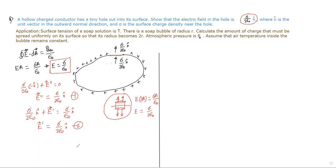Now we can use this result to find electrostatic pressure. The charge on the red marked portion is σA, and the field due to the remaining portion is σ/2ε₀. So the force on the marked portion can be found, and the corresponding electrostatic pressure equals force per area, which is σ²/2ε₀.